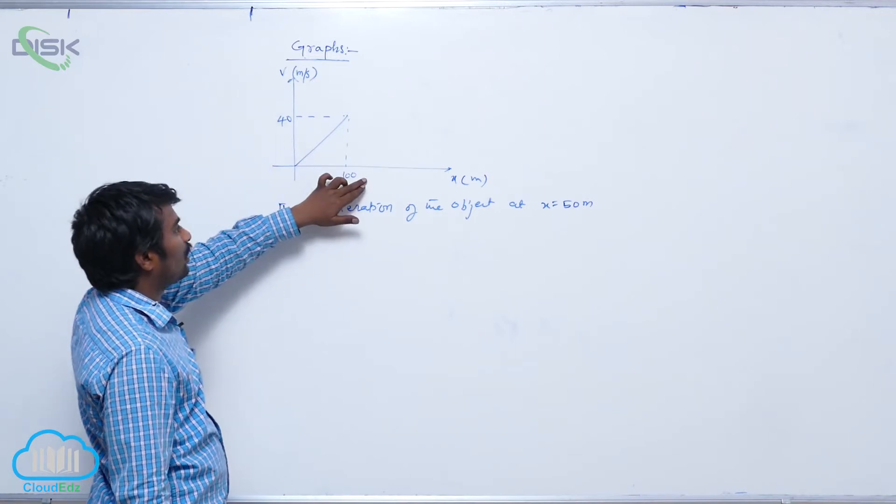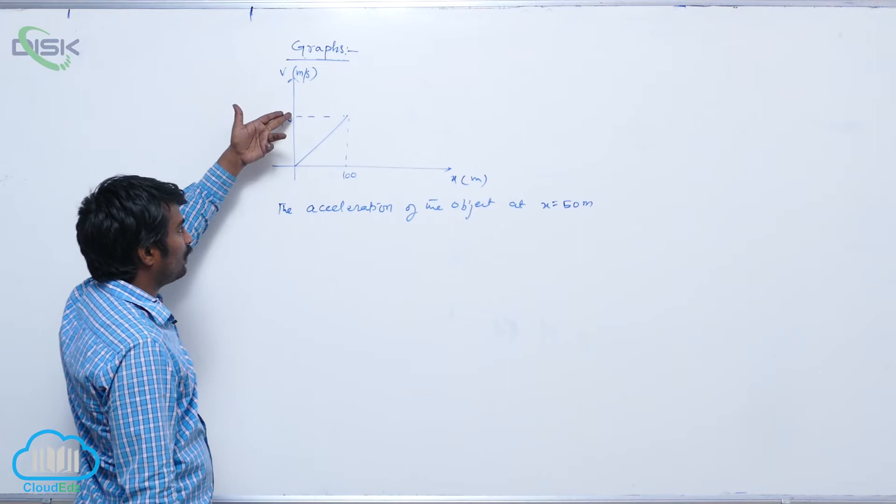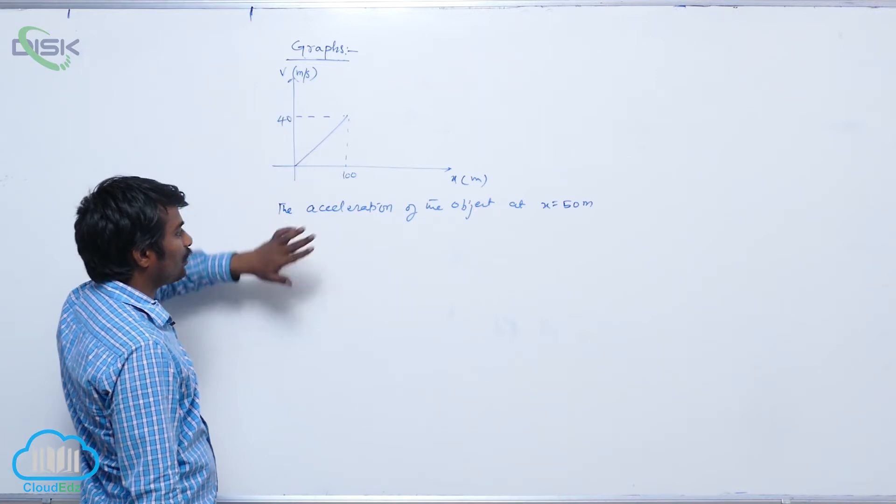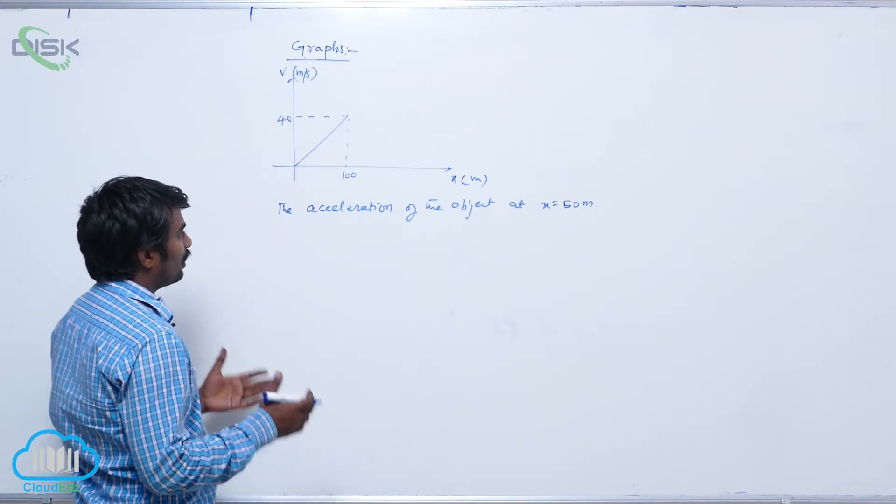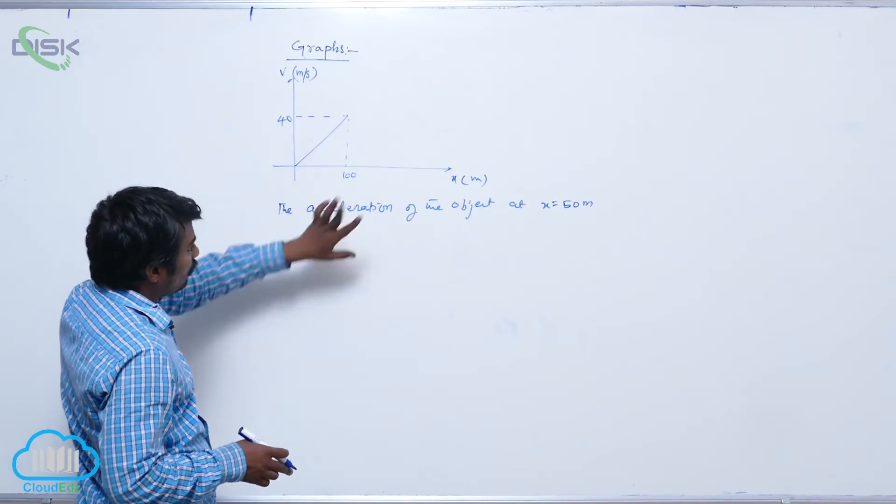Suppose if velocity as a function of time is given, I can calculate the equation of the straight line and differentiate it one time. dv by dt gives you acceleration directly. But here, if you develop the equation, you will be getting velocity as a function of x.